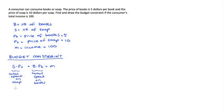Now substituting in what we know from the question, which is the prices and the income, we get S times the price of soap is 10, plus B times the price of books is 5, that's equal to 100, which is the income. So that's really our budget constraint right there.